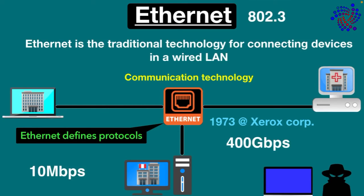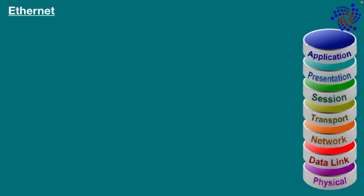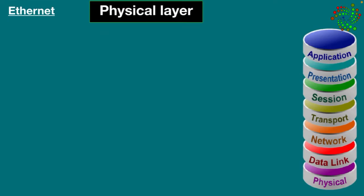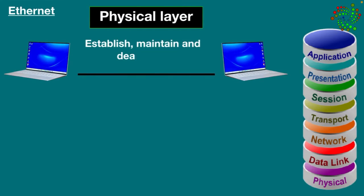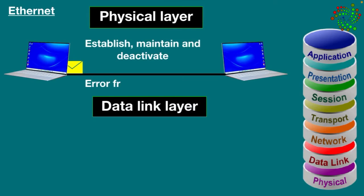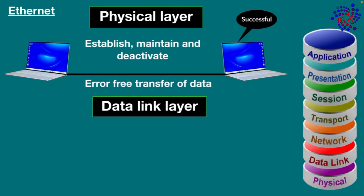Let's go into a little more detail. Ethernet facilitates the physical layer and data link layer of the OSI model. The physical layer establishes, maintains, and deactivates physical connections. Its primary function is transmitting the individual bits from one device to another. The data link layer is responsible for error-free transfer of data.